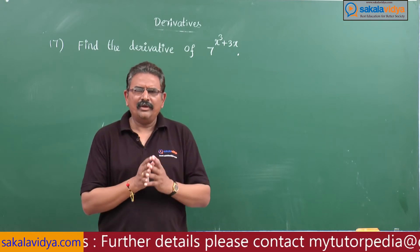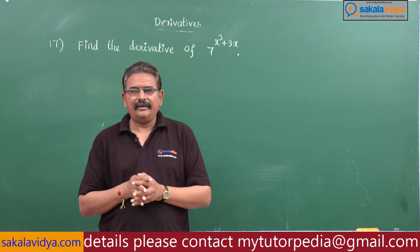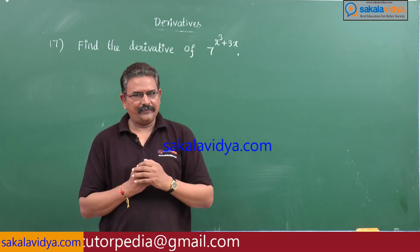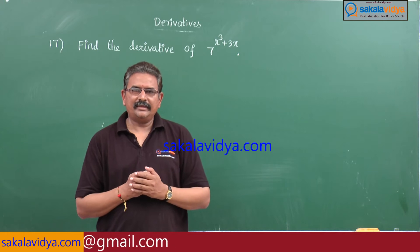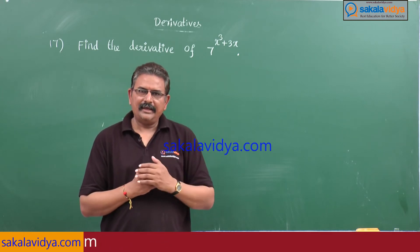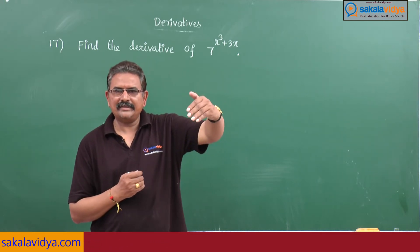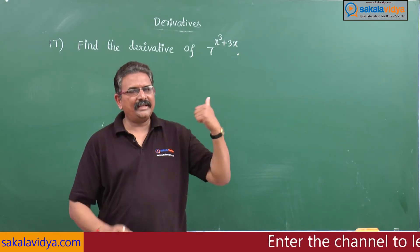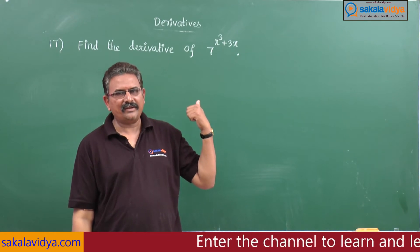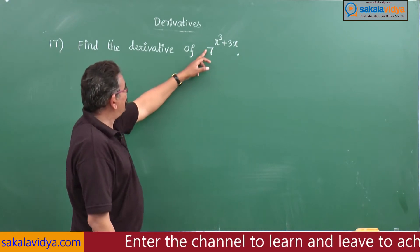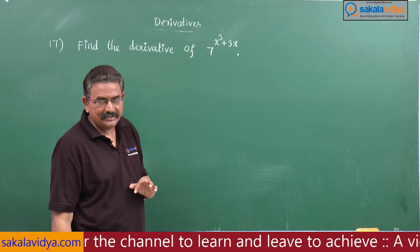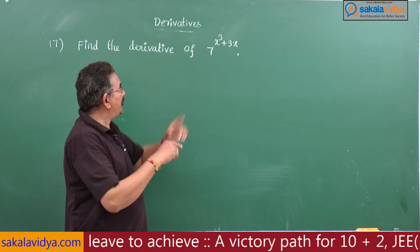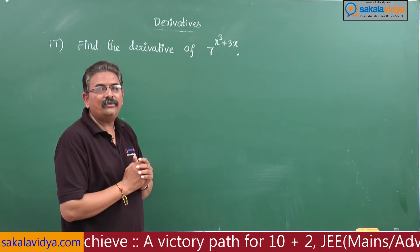We know that the derivative of a^x is a^x times log a. Instead of a^x, when a^f(x) is there, we write a^f(x) and multiply by the derivative of f(x), that is f'(x), and log a. So now you can expect the derivative of the given function. 7 to the power of x cube plus 3x is 7 to the power of x cube plus 3x, and derivative of x cube plus 3x, into log 7.